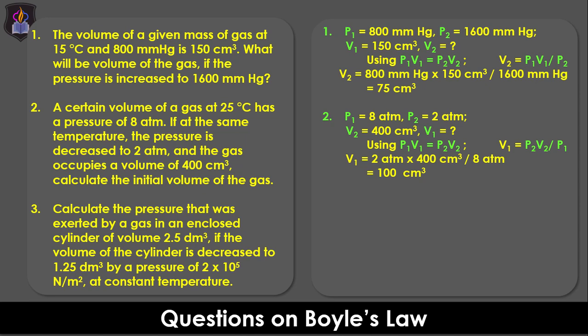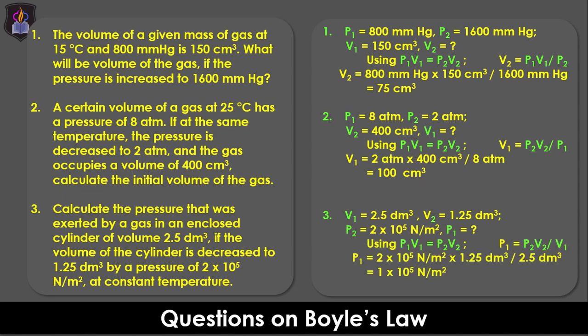Solution: From question 3, we are given the initial and final volumes V₁ and V₂ as 2.5 dm³ and 1.25 dm³ respectively and the final pressure P₂ as 2 × 10⁵ N/m² and asked to determine the initial pressure P₁ at constant temperature. So making P₁ the subject of formula, then substituting the values and evaluating the equation, we obtain 1 × 10⁵ N/m² as the initial pressure of the gas.